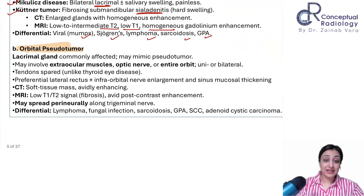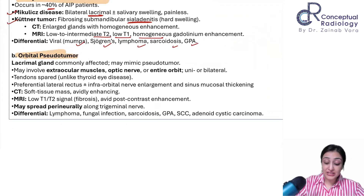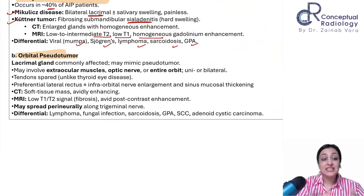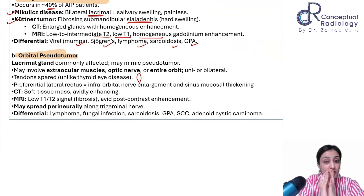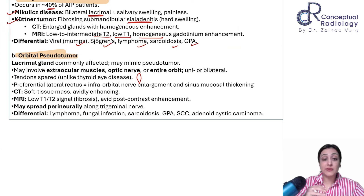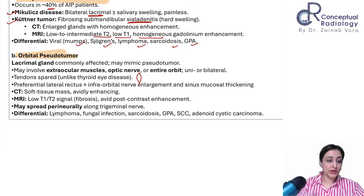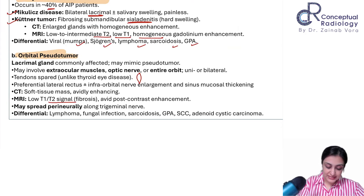For orbital pseudotumor, the lacrimal gland is most commonly involved. Unlike thyroid eye disease where we remember the Coca-Cola sign with tendinous sparing, in IgG4 there is complete thickening of the muscles with involvement of the intraconal compartment. Signal intensity is low with avid enhancement.